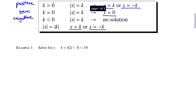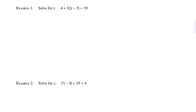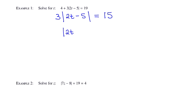In example 1, we have: solve for t, 4 plus 3 times the absolute value of 2t minus 5 equals 19. To solve this, the first thing I'll do is move the 4 to the other side. That leaves me with 3 times the absolute value of 2t minus 5 is equal to 15. The absolute value functions just like parentheses, so first I must divide by 3. When I divide both sides by 3, I still have the absolute value of 2t minus 5, and then 15 divided by 3 is 5.